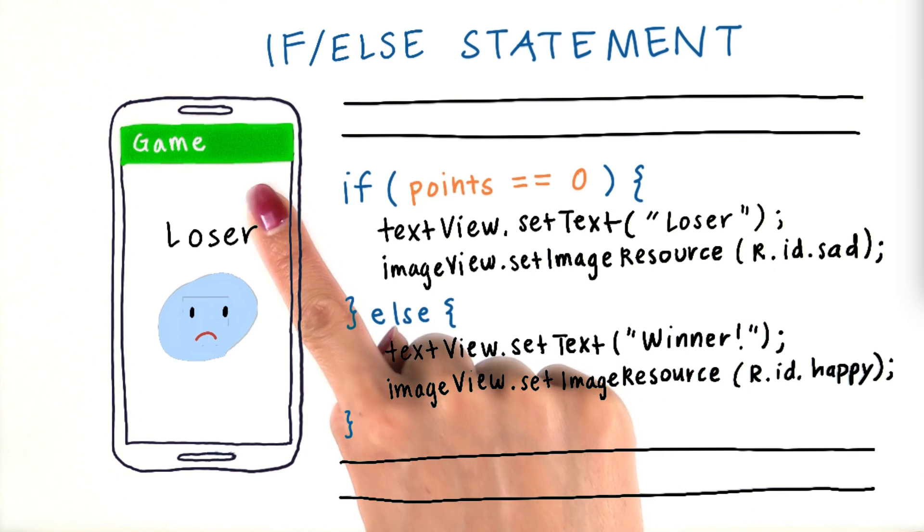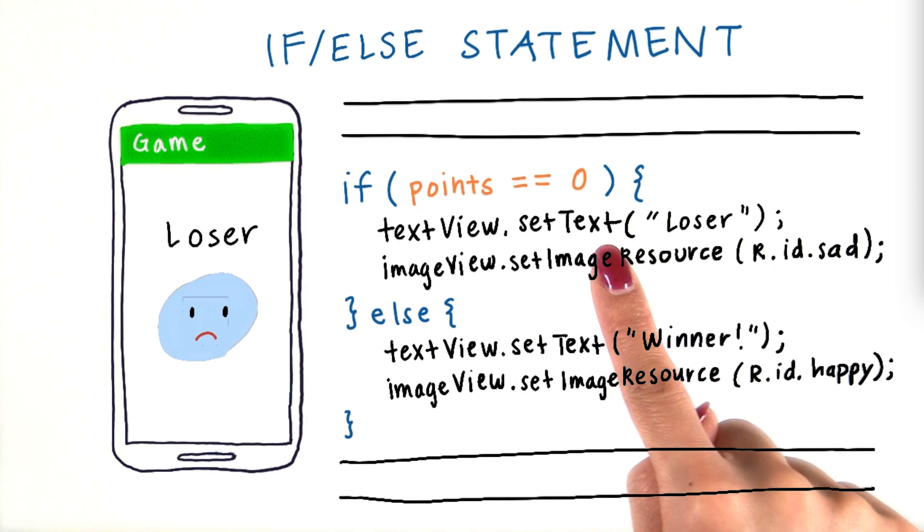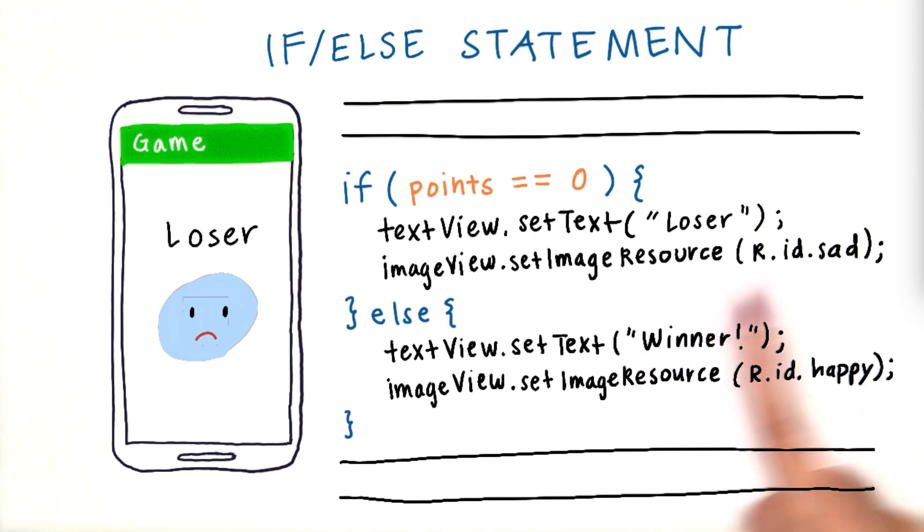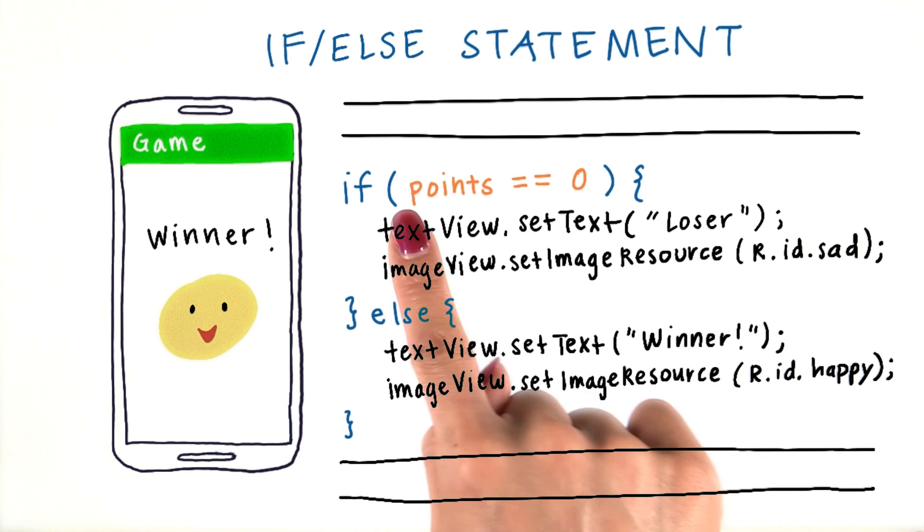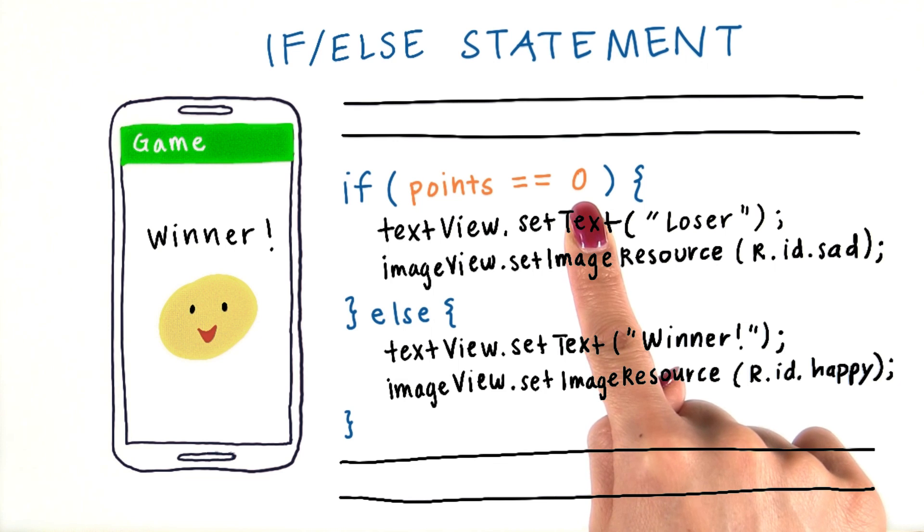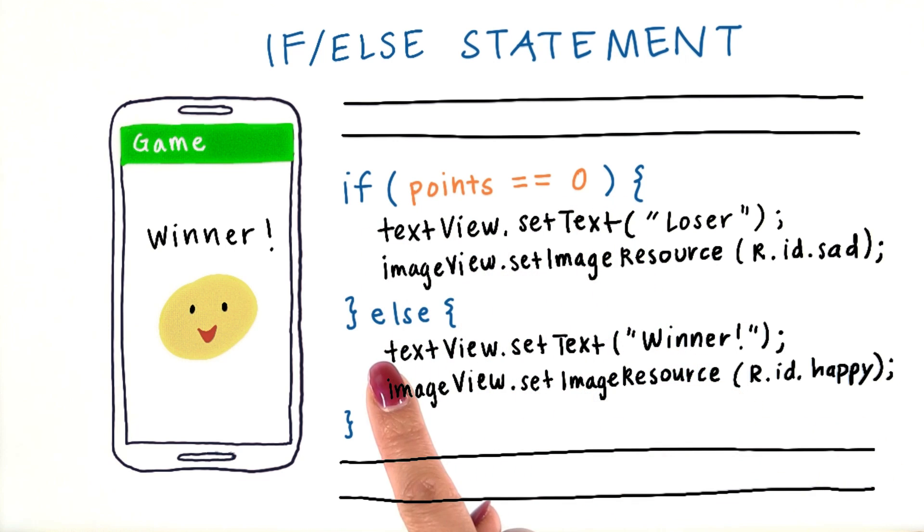So in this game app, if the user has zero points, then we're going to update the text view to say loser, and we're going to update the image view to be a sad face. However, if the condition is false, the person has, for example, 100 points, then we're going to skip this block of code, and we're going to go down here to the else case. We're going to update the text view to show the word winner, and then we're going to update the image view to show a happy face. Then we're going to continue with these lines of code here.